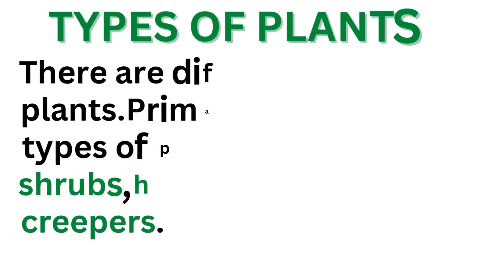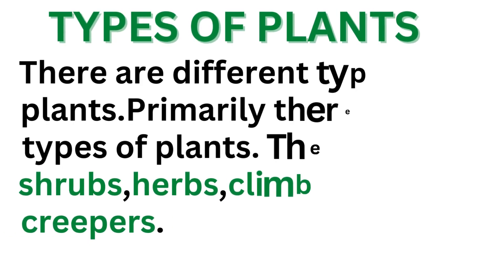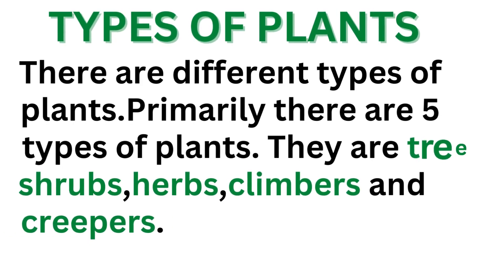Types of Plants. There are different types of plants. Primarily there are five types of plants. They are trees, shrubs, herbs, climbers, and creepers.